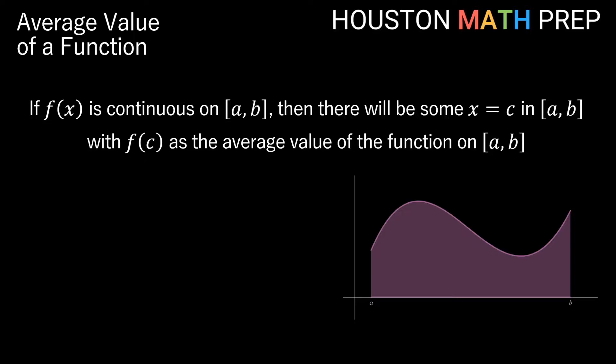If we have some function and it's continuous on some interval a to b like my picture here, there is going to be some x value. It could be at a, it could be at b, it could be in between, and it could be more than one of the x values in between where the function hits its average value on this interval.